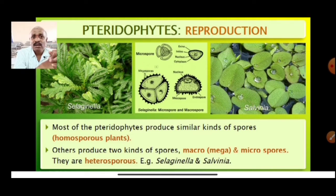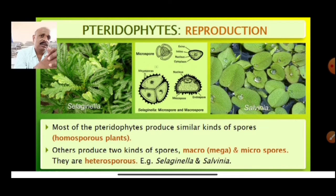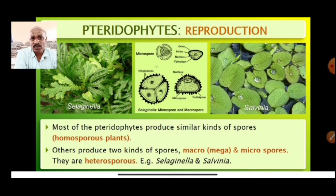In most pteridophytes, similar kinds of spores are produced — hence we call them homosporous plants. Other pteridophytes produce two kinds of spores — macrospores and microspores — and these are called heterosporous, as in Selaginella and Salvinia.